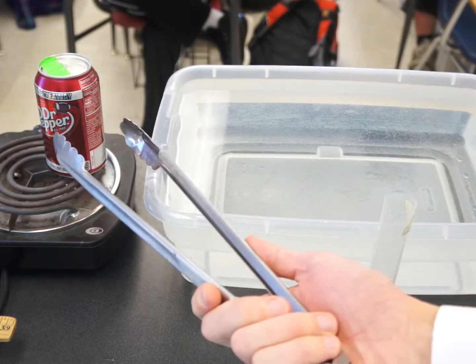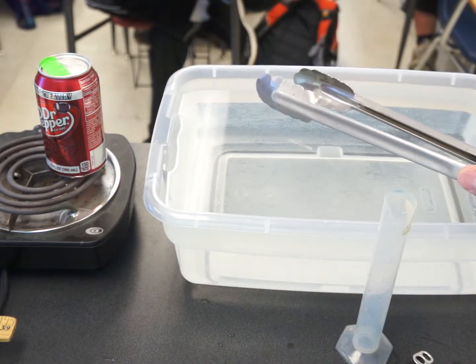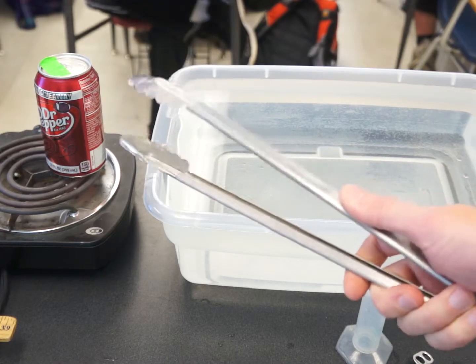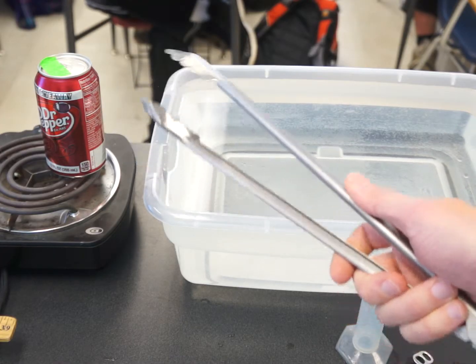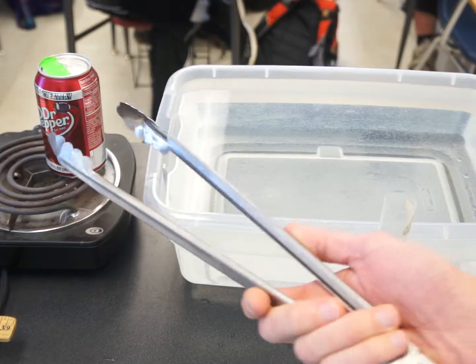I'm going to take the can, which is now filled with water vapor. I'm going to turn it upside down in the cold water, and the water vapor will condense back into water, reducing the pressure inside the can a lot.